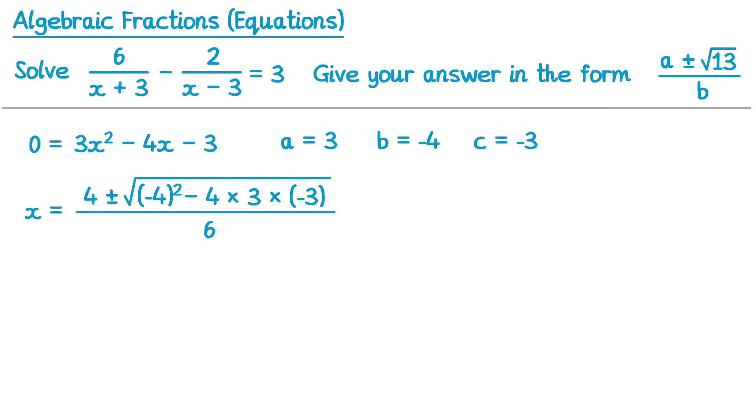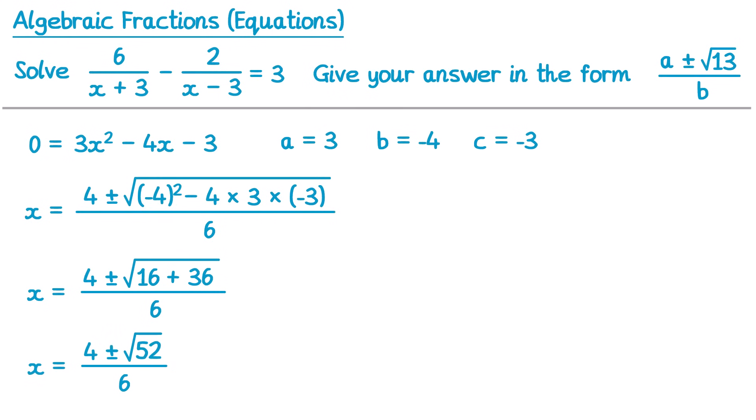Now this question would actually be a non-calculator question, so we're going to need to work out the value of the number that's inside that square root. So let's write x equals 4 plus or minus the square root of something over 6. Negative 4 squared would be negative 4 multiplied by itself, so 16. And then negative 4 multiplied by 3 is negative 12, and then multiply that by negative 3, that becomes a positive 36. So we end up with 16 plus 36 inside that square root. You can add those two together — that's 52 — so x equals 4 plus or minus square root of 52 over 6.